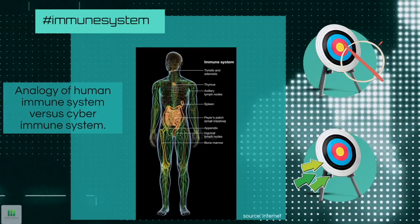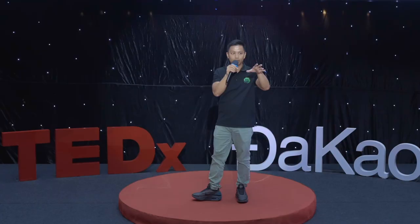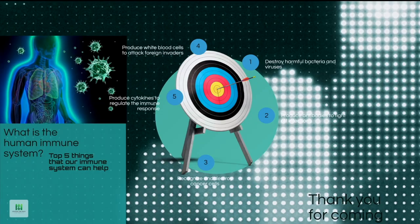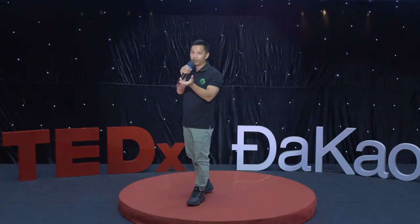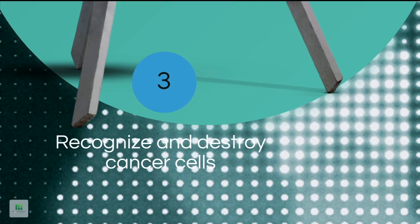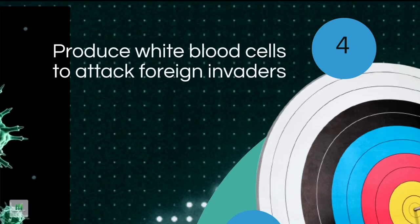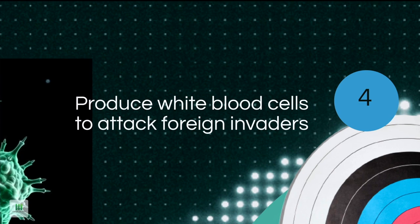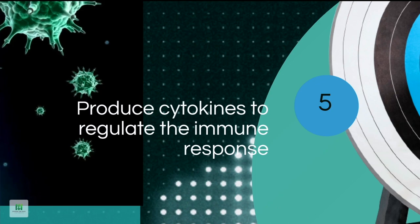There are a lot of different parts in the body, and this body supports us to protect against different bacteria and viruses — the same thing with cybersecurity. The immune system helps us in five ways: it destroys harmful bacteria and viruses, produces antibodies to fight infection, recognizes and destroys cancer cells, produces white blood cells to attack foreign invaders, and produces cytokines to regulate the immune response.